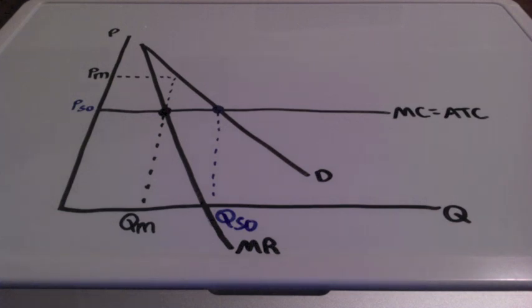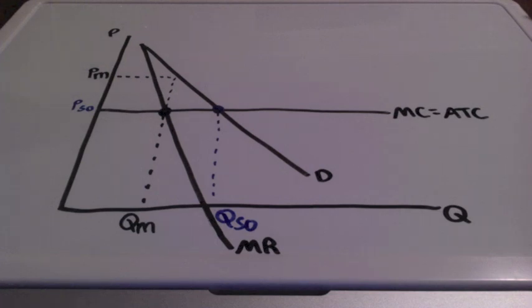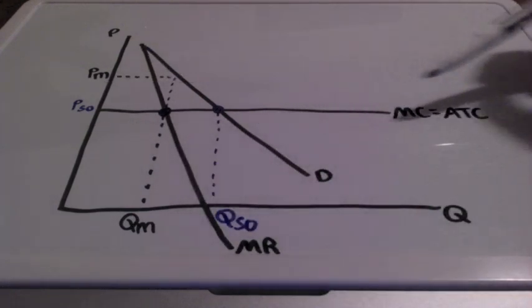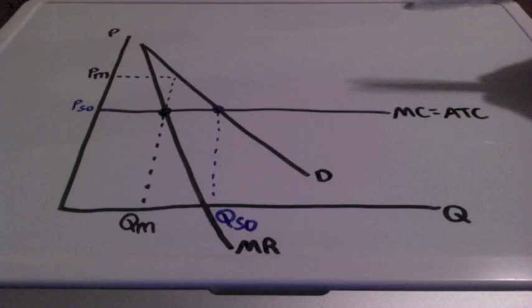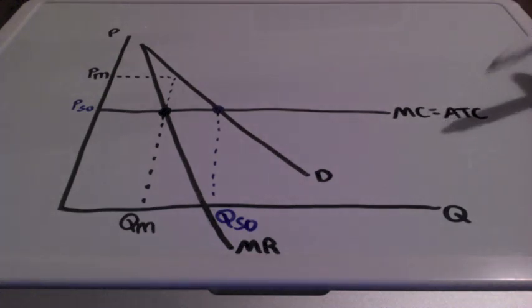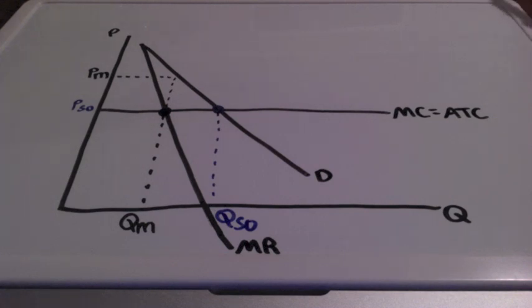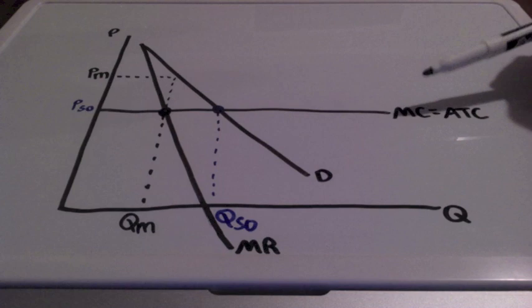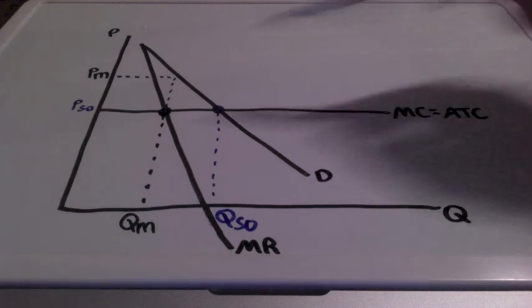Some firms are referred to as natural monopolies and they enjoy such strong cost advantages to being so big and so powerful that their marginal cost curve never starts sloping upward. In these cases, marginal cost is perfectly horizontal. Marginal cost is constant and it equals the firm's average total cost, though marginal cost doesn't technically have to be constant. When we refer to natural monopolies — a pure monopoly — the marginal cost curve could resemble what we see here.